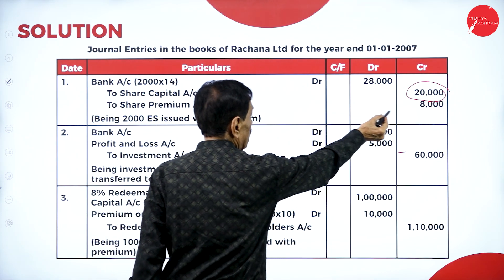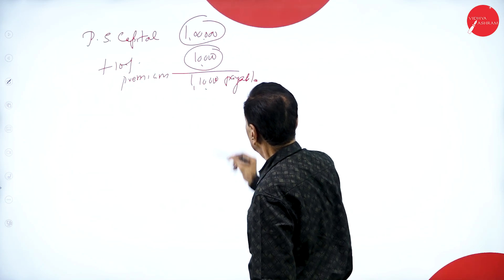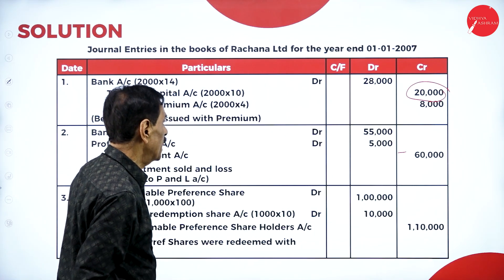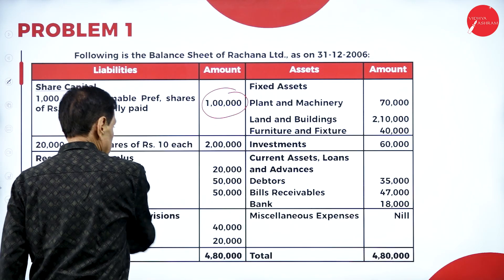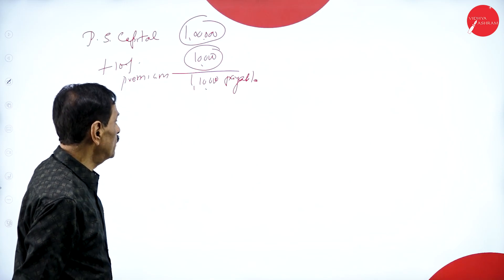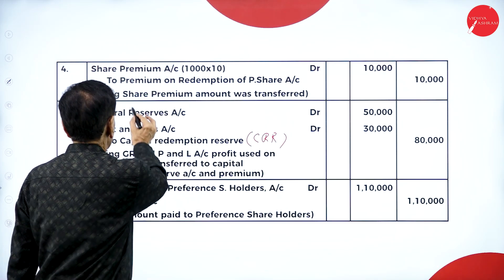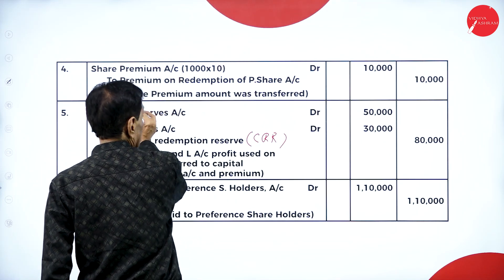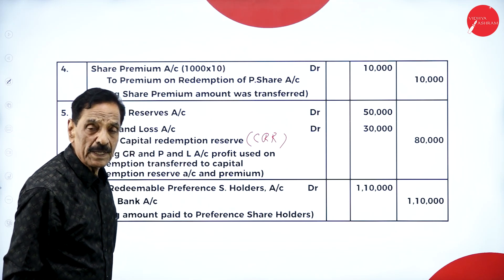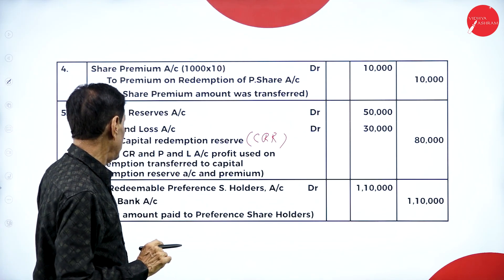Then only the premium will be left over. You received a premium of eight thousand from the fresh issue, but the premium payable is ten thousand. Come back here — in your balance sheet, your existing security premium is twenty thousand. Utilize that amount: pass the entry Equity Share Premium Account Dr. to Premium on Redemption of Preference Shares, ten thousand. So even the premium has been paid.